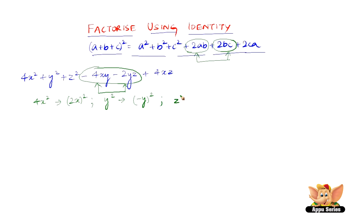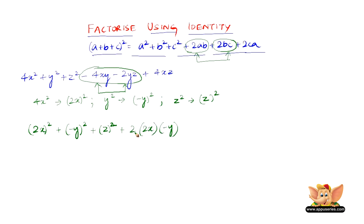And we write z² as simply (z)². Therefore, we have (2x)² + (-y)² + (z)² + 2·(2x)·(-y) + 2·(-y)·(z) + 2·(2x)·(z), which is of the form a² + b² + c² + 2ab + 2bc + 2ca.